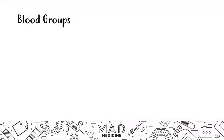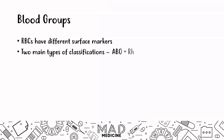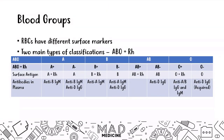Let's talk about blood groups. We made a video previously on our YouTube channel where we talked about blood groups and what they're composed of, so go ahead and check that out on the playlist. Essentially, red blood cells have different surface markers, and depending on those surface markers, we can classify people into certain blood group categories. Two main types you need to know for step one are the ABO and the RH blood group classifications.